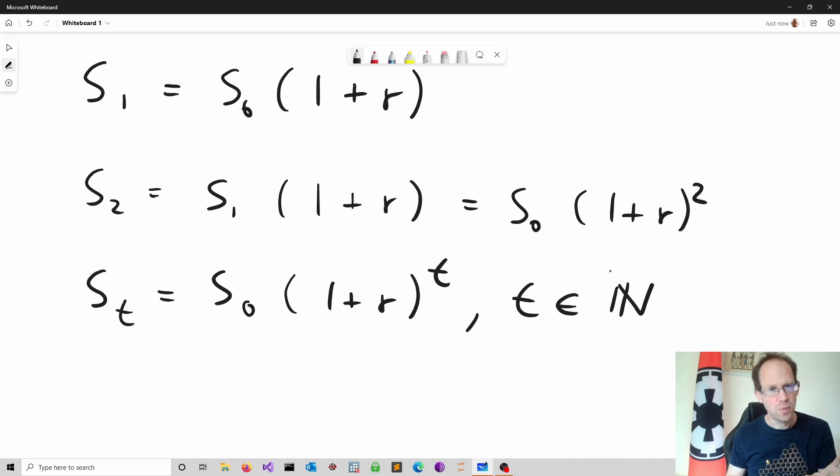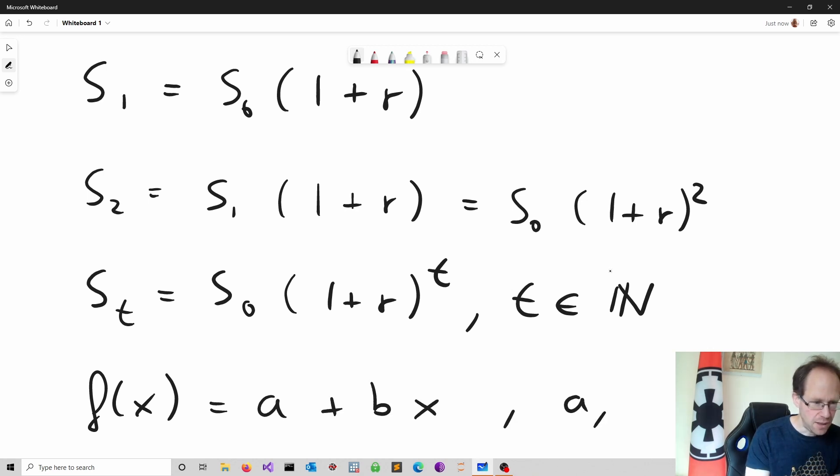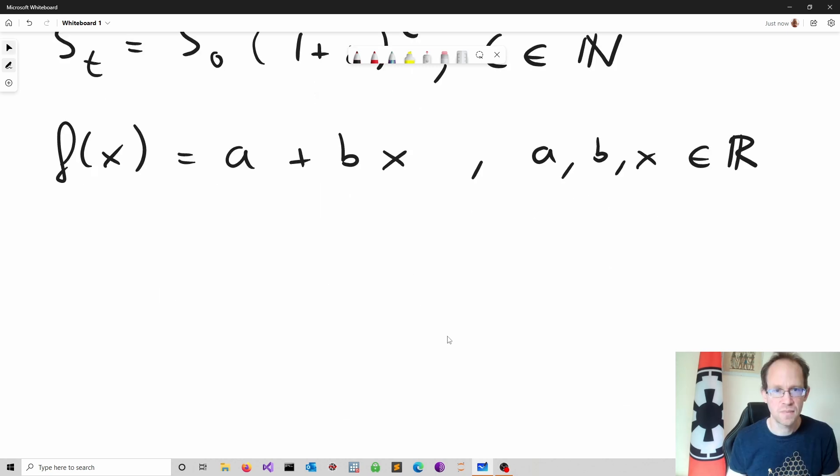Let's talk about the basics related to functions. Let me just write down a simple linear function. f of x is equal to a plus bx. The domain of this function refers to the set of permitted input values, which in this case is R. The image set is the set of output values, which in this case is again R.